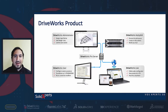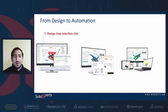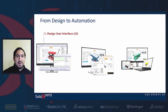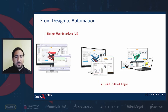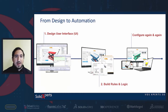How do you go from design to automation using DriveWorks? To configure a product, there are two main steps: you have to design the user interface, and then you have to build the rules. You design the user interface, build the rules, put the logic inside the rules, and finally you're able to configure the model again and again.